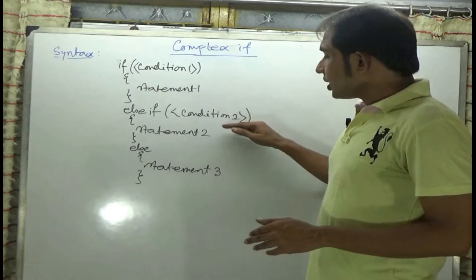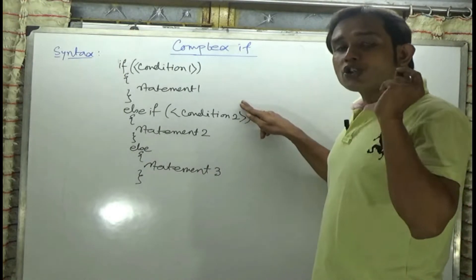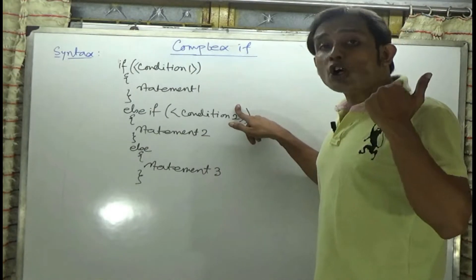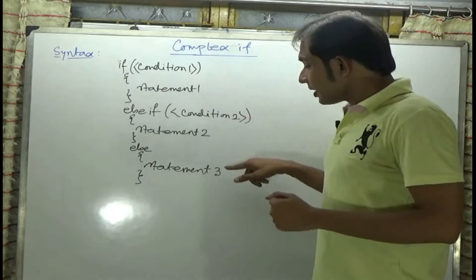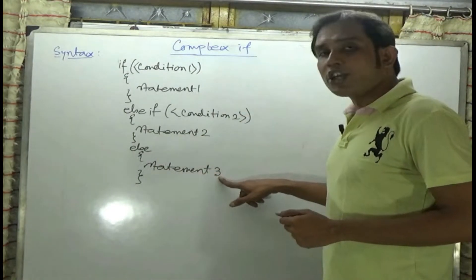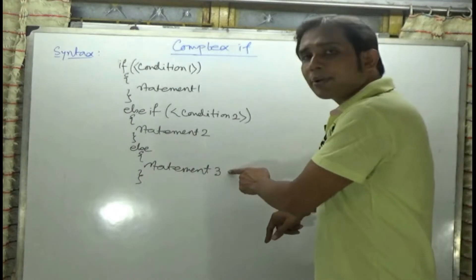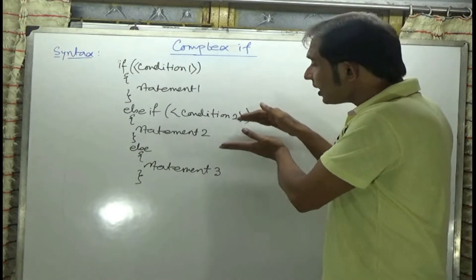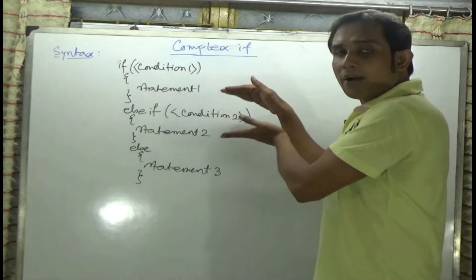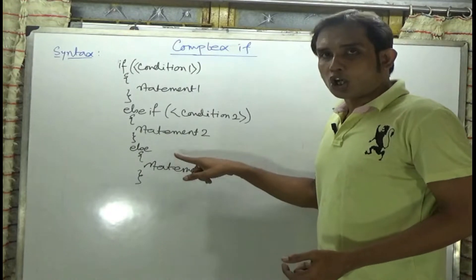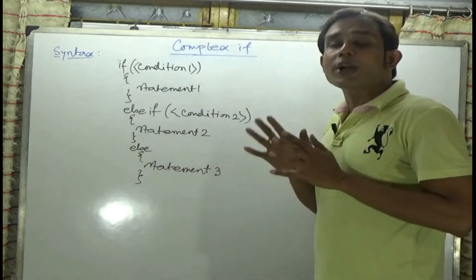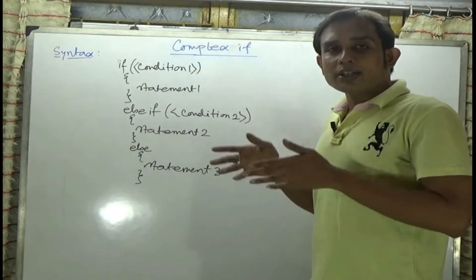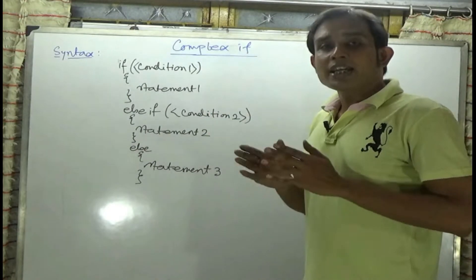So after doing this, if condition 2 becomes true, then statement 2 executes. And if condition 2 is not true — it means it becomes false — then control goes to the else block and statement 3 is going to execute. Statement 3 executes when condition 1 becomes false and condition 2 becomes false. That means all the conditions written in the complex if become false, then the else block of the complex if statement is going to execute. So in case of complex if, the else block only executes when all conditions written in the complex if statement become false.